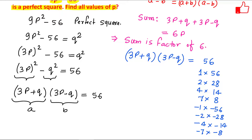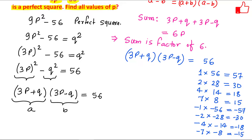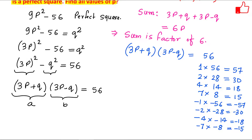Now let us check the sums of each factor pair. For 1 × 56, sum = 57. For 2 × 28, sum = 30. For 4 × 14, sum = 18. For 7 × 8, sum = 15. For the negative pairs: -57, -30, -18, -15. Since the sum must be divisible by 6, we eliminate 57 and 15 (not divisible by 6). The valid sums are 30, 18, -30, and -18 — giving us four possibilities.